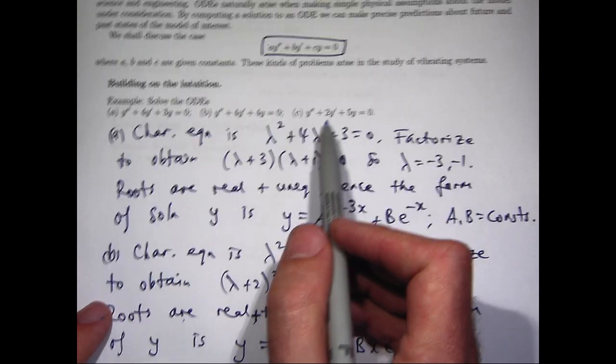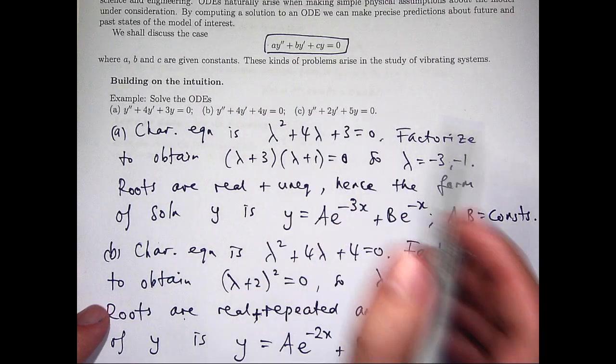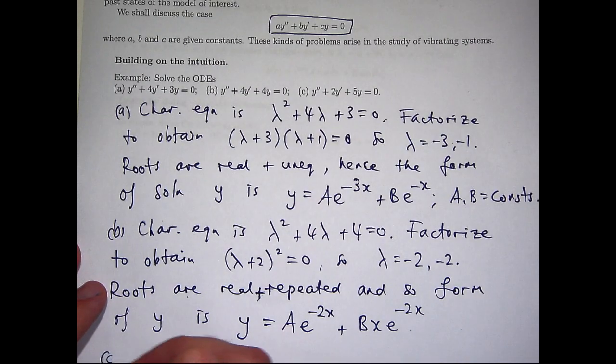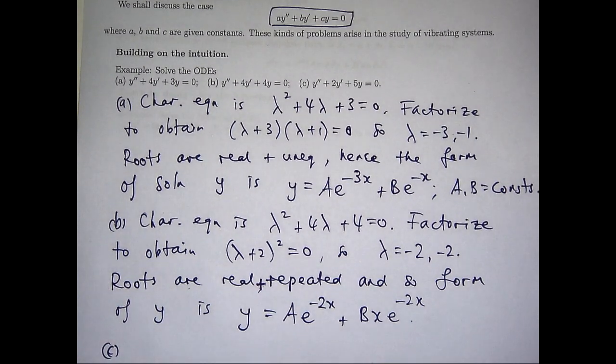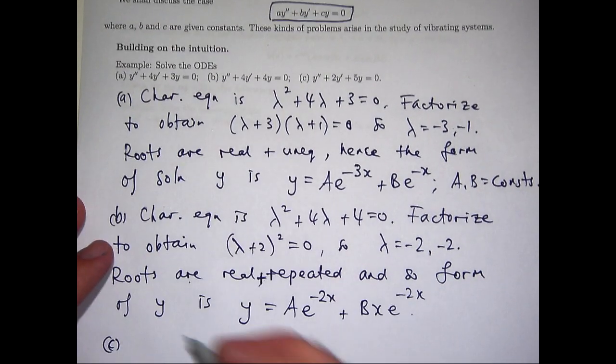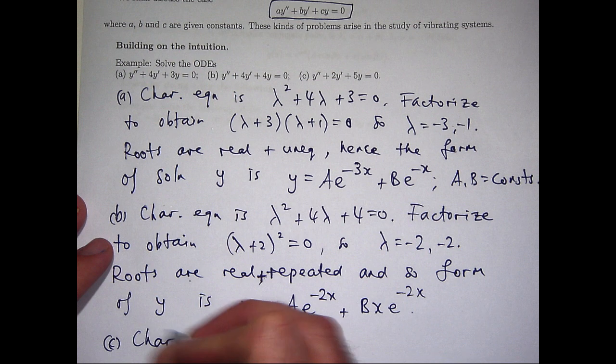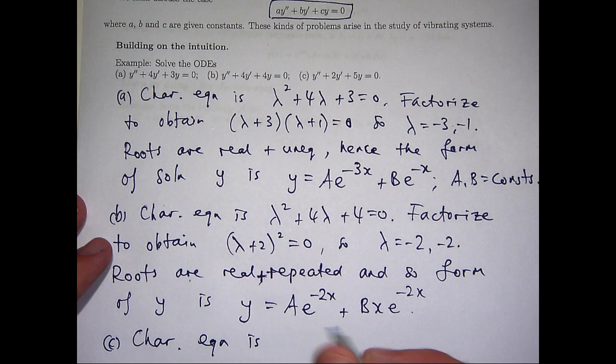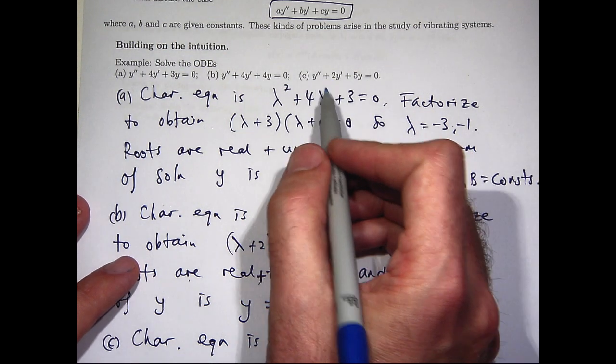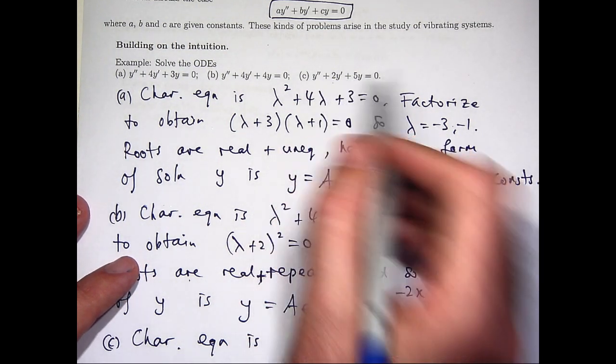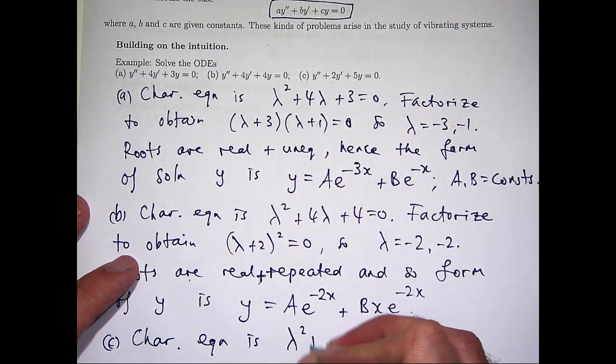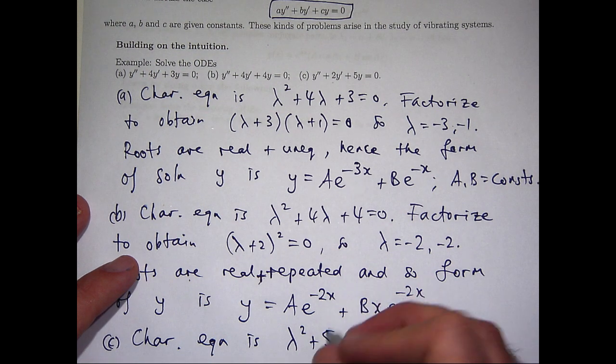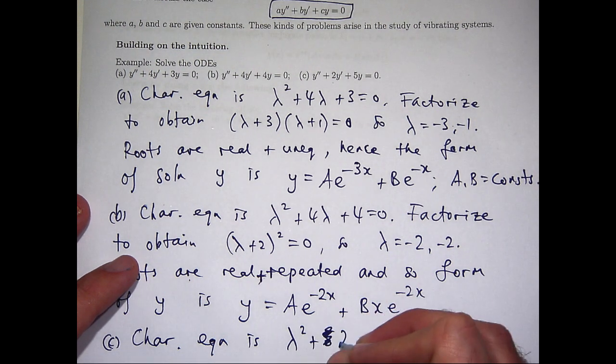Alright, the last one is this one here. So let's look at that case. For this particular problem, we're going to get complex roots. So we've kind of covered all the possibilities with these three problems. So again, let's write down the characteristic equation. So it's going to be lambda squared plus 2 lambda plus 5 equals 0.